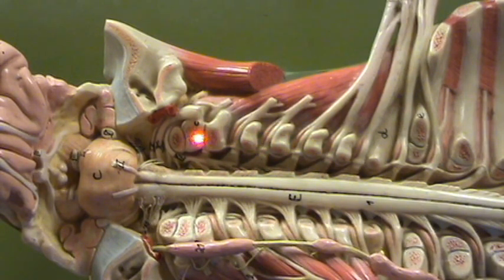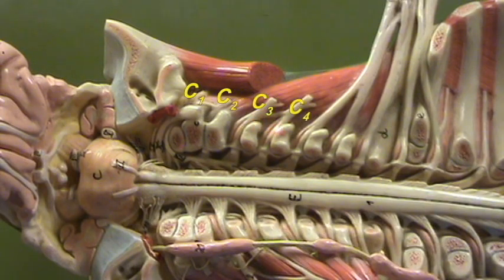We have C1 exiting above the first cervical vertebra, then we have C2, C3, C4, and these are going to form the cervical plexus along with some contribution from C5. So here's C5, C6, C7.